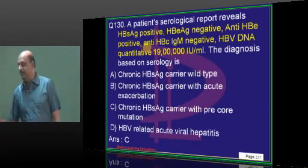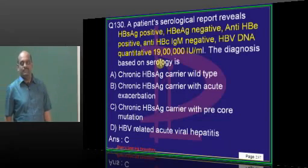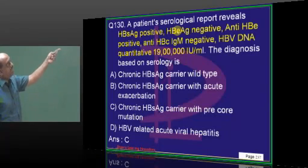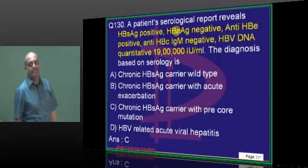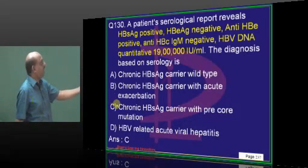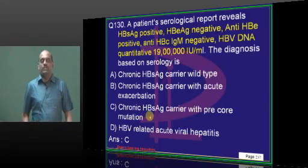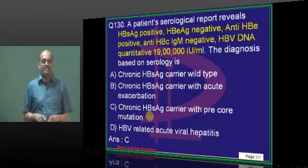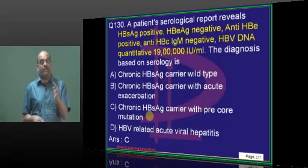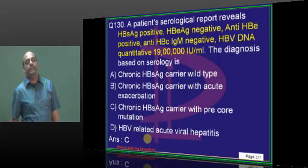Hepatitis B — envelope antigen negative, antibody positive as expected — no big challenge. But HBsAg is still positive, antibody did not appear, and IgM is negative. So it is an example of a chronic HBsAg carrier with a pre-core mutation. Based on serology, how to recognize a vaccinated individual, acute infective, acute non-infective, chronic, or carrier — you have to be 100% sure of the hepatitis B serology table. Definitely a question.